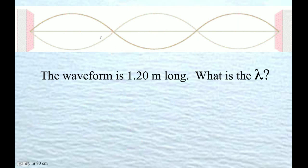If this is 1.20 meters long, then each of these is 0.4. Right? So clearly the wave is this. This is the wave. It must be 0.8, right? Doesn't matter how you do it. I don't care if you use my method.